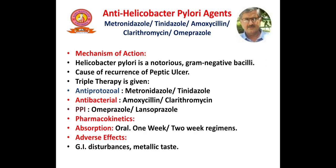Next is anti-Helicobacter pylori agents. Helicobacter pylori is a notorious gram-negative bacilli bacteria associated with peptic ulcer. The treatment involves triple therapy — a combination of an antiprotozoal, an antibacterial agent, and a proton pump inhibitor such as metronidazole, tinidazole, or amoxicillin combined with omeprazole.